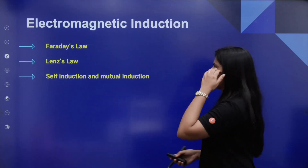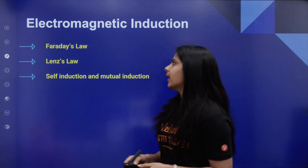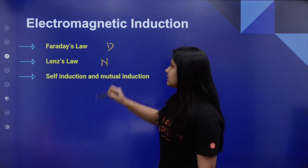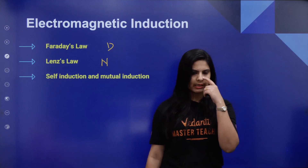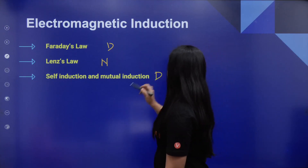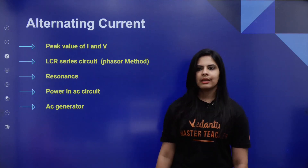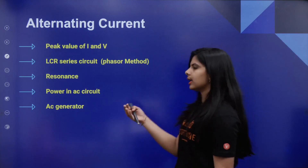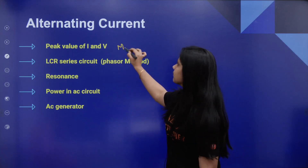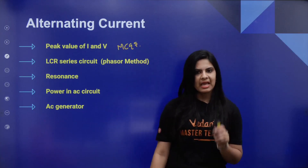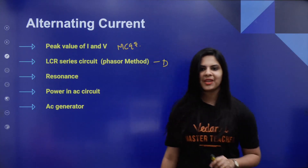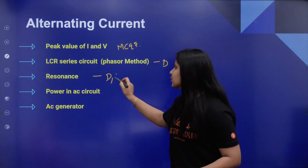This is Electromagnetic Induction. Faraday's Law and Lenz's Law — derivations. Self-induction and mutual induction — also applications. Peak value of EMF — MCQs. The LCR series circuit is a derivation. We expect derivations and numericals in this chapter.